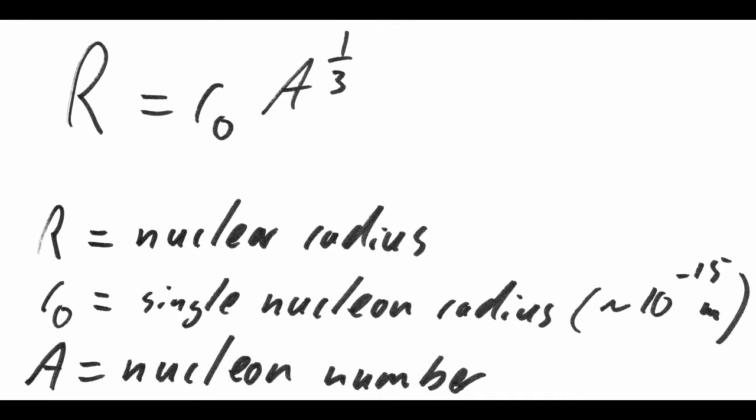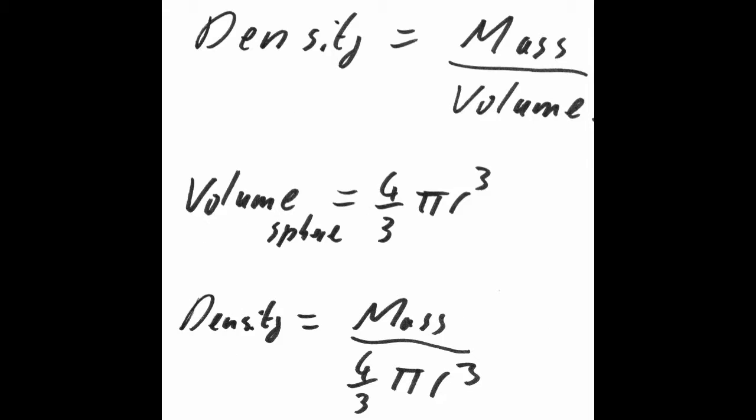Density is mass divided by volume, and the volume we are interested in here is the volume of a sphere. A nucleus could be better defined as a collection of spheres, but we approximate everything else, so why not here?